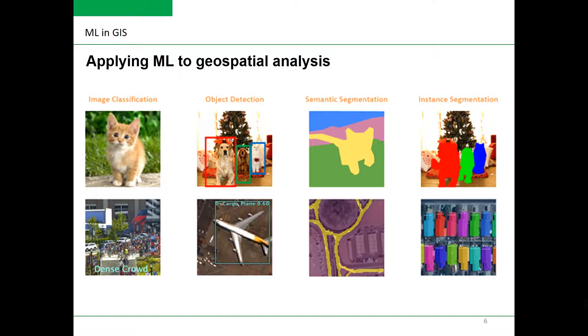The figure on this slide shows some of the most important computer vision tasks or use cases and how they can be applied to GIS. So the examples include image classification, object detection, segmentation, and finally prediction, which is not shown on this slide.